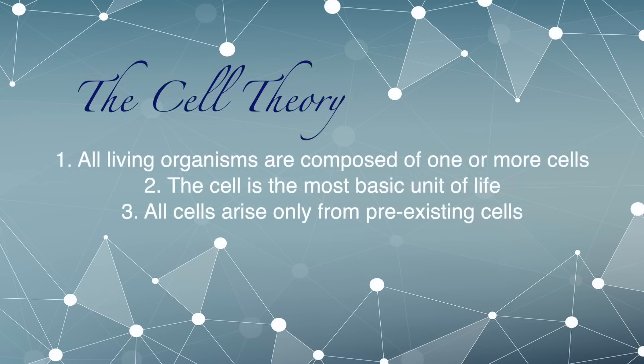The cell theory consists of three tenets. Number one: all living organisms are composed of one or more cells. Number two: the cell is the most basic unit of life. And number three: all cells arise only from pre-existing cells. Which one of these components was the most controversial at the time? The answer is number three — that all cells arise only from pre-existing cells.